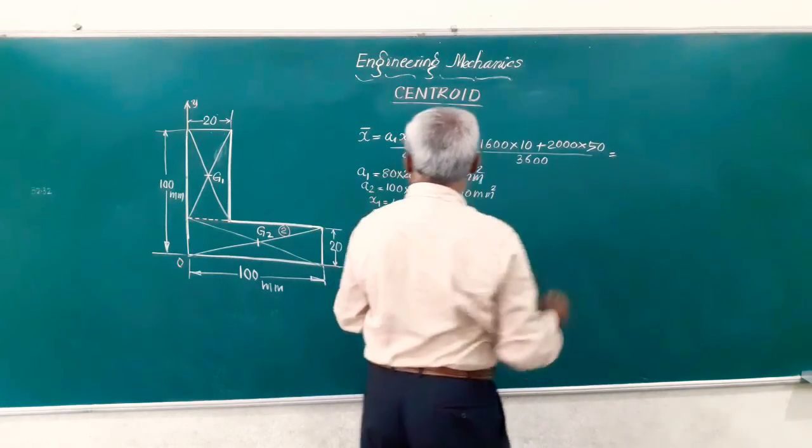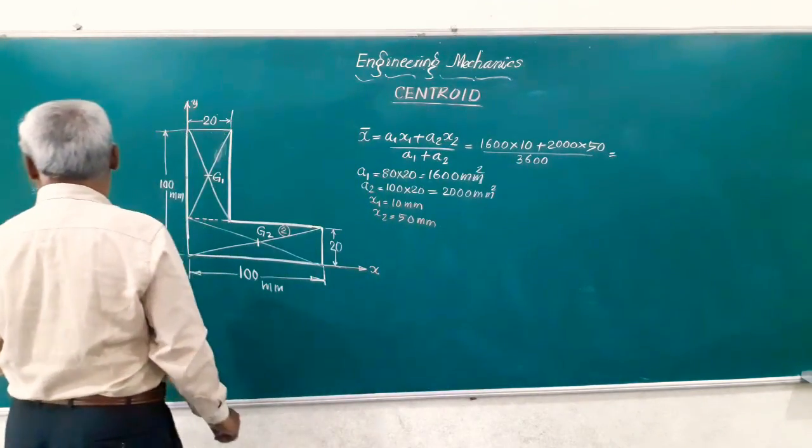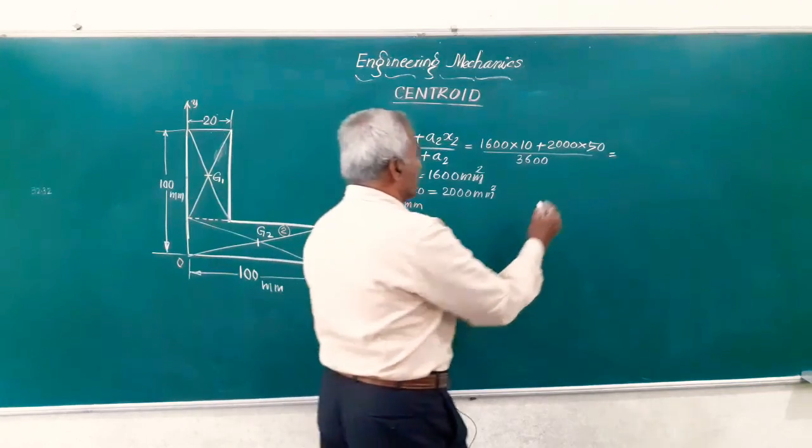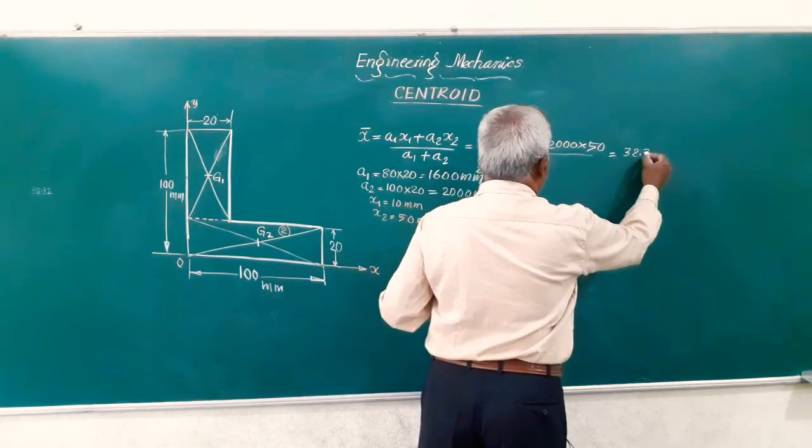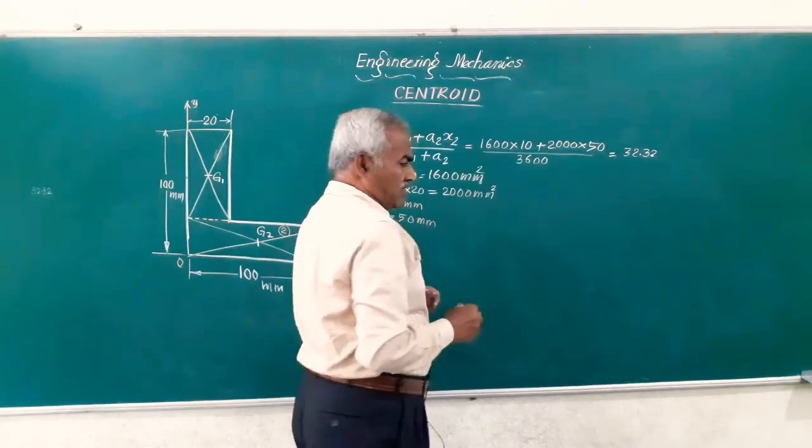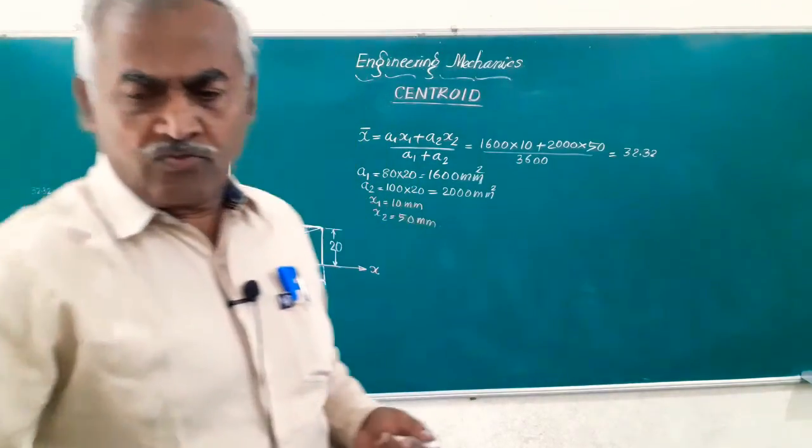If you simplify this, it works out to 32.32 mm. That is the value of x bar. x bar is 32.32.